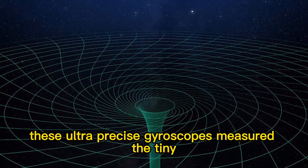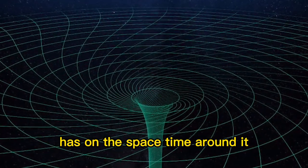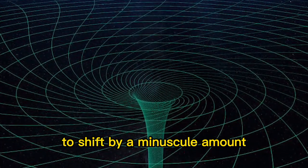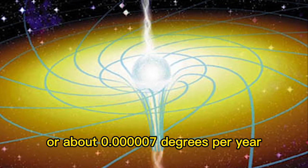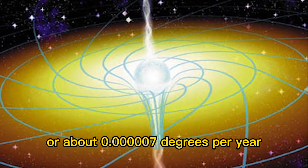These ultra-precise gyroscopes measured the tiny twisting effect that Earth's rotation has on the spacetime around it, causing the direction of a gyroscope's axis to shift by approximately 0.041 arcseconds, or about 0.0000007 degrees per year.